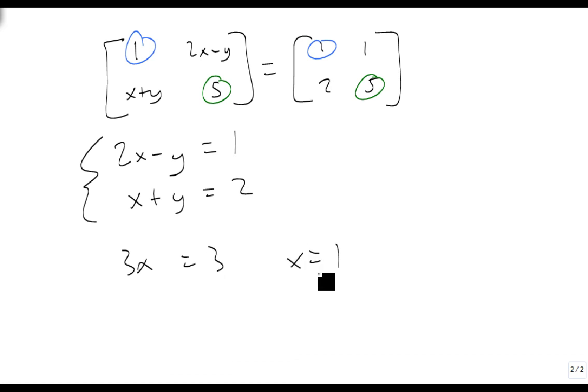Well, if x is 1, then we plug that back in, and we get 1 plus y equals 2, so y equals 1, and we check that. 2 times 1 minus 1, sure enough, is 1. So my x is 1, and my y is 1, and that makes these two matrices equal to each other.